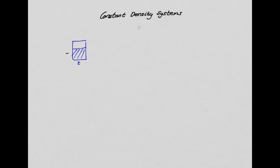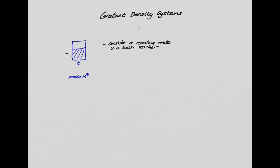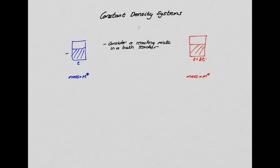Let's now consider the concept of a constant density system, explained initially in terms of a batch reactor. Consider a batch reactor filled at time t with some mass of material M*. We let the reaction occur and a while later the contents have changed — more products, fewer reactants. However, the contents must still weigh the same as what we started with because mass is conserved, so the mass at any time in the batch reactor remains M*.